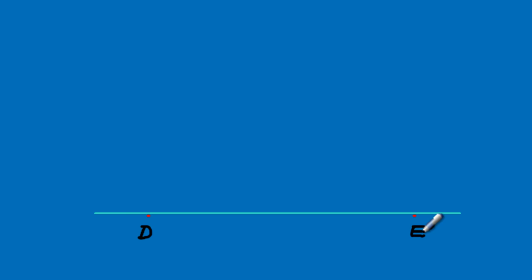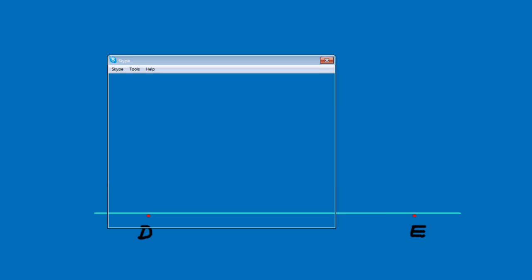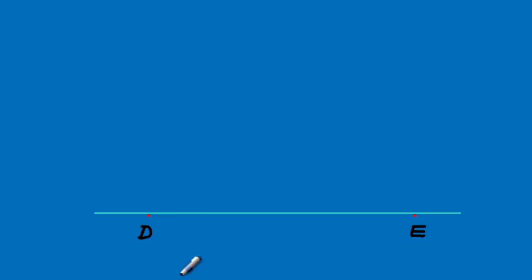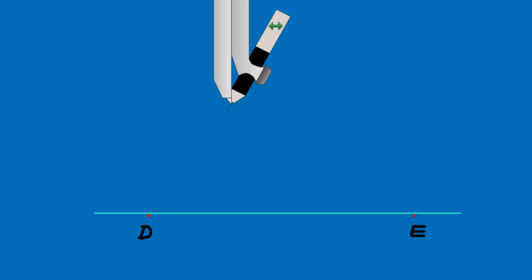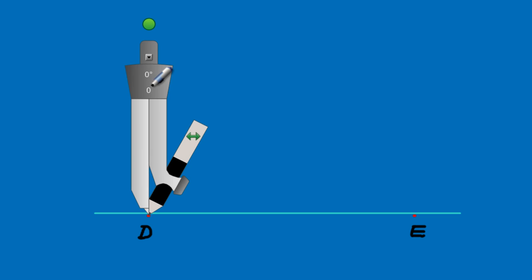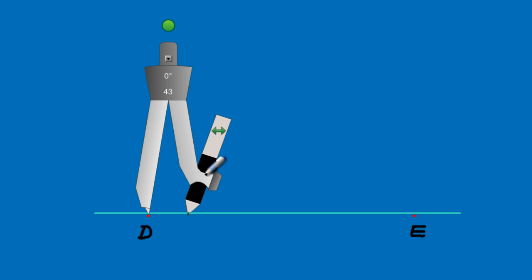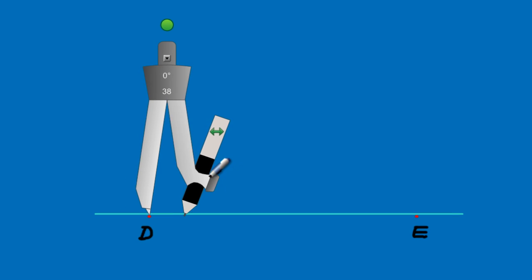We need to construct a 45-degree angle at point D. I'll place my compass at point D and open it to a comfortable radius. I extended the line to the left so I can construct my 90-degree angle more comfortably. I place the compass at D and swing an arc — I'm using red to indicate construction lines.